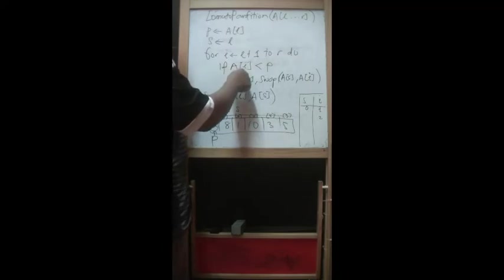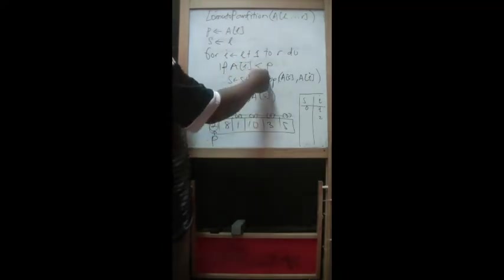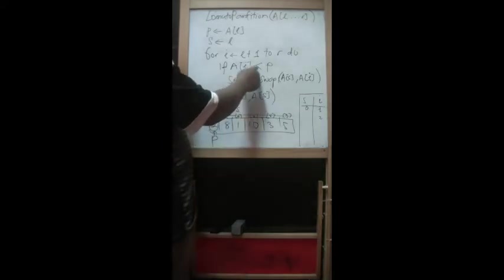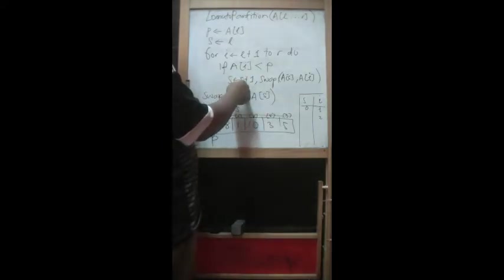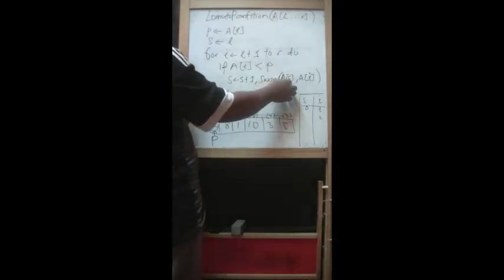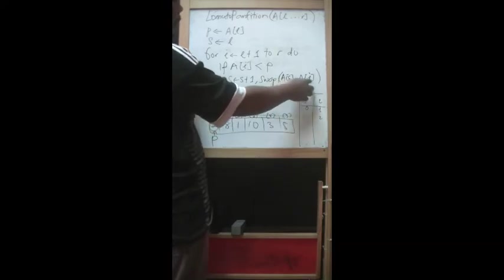A[I], whatever value of I here, for the index here, less than P. P actually the default is index zero. For this case is index zero. The value is two. And if this is true then update the S. The value of S, S plus one. Start with zero. S plus one is one. And after that you have to do the swap. Swap which will exchange the value of S, the current S value, with the I here.